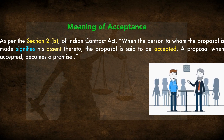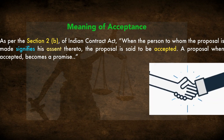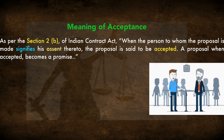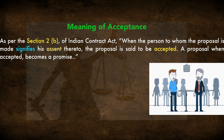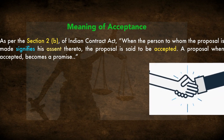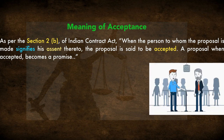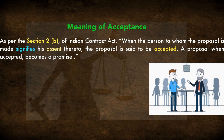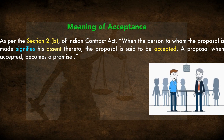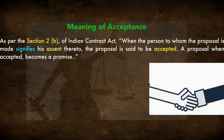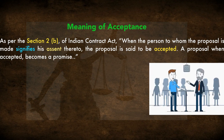As defined in Section 2(b) of the Indian Contract Act: when the person to whom the proposal is made signifies his assent thereto, the proposal is said to be accepted. A proposal when accepted becomes a promise. So it is basically the definition of a promise, but it explains how and what acceptance is.